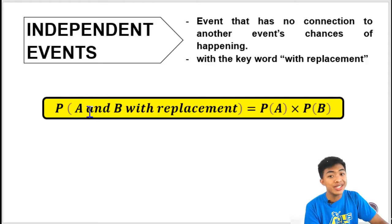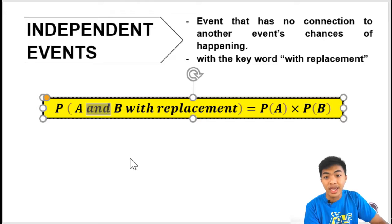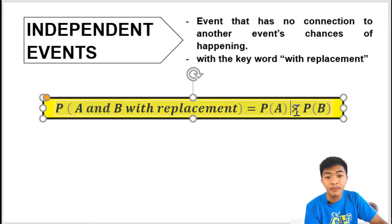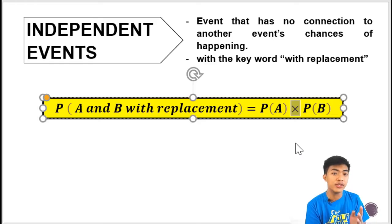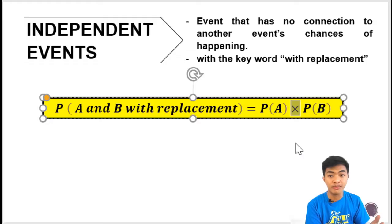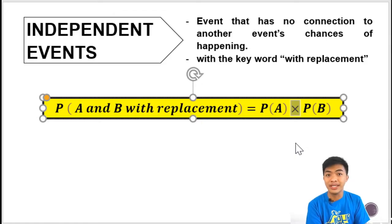Take note of the keyword. The keyword here is 'and.' With the conjunction 'and,' we will be multiplying. Unlike in the previous video on mutually exclusive and non-mutually exclusive events, the conjunction used was 'or,' and the operations involved were addition and subtraction. But here, 'and' is the conjunction used, and we will be multiplying probabilities.